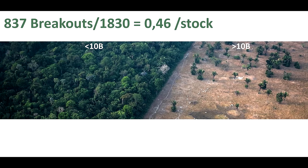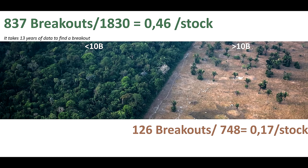Below 10 billion: 837 breakouts in 1,830 stocks gives 0.46 breakouts per stock, meaning it takes roughly two stocks to find one breakout. Since one stock represents six years of data, that works out to about 13 years of data per breakout. Above 10 billion the number is much lower — 0.17 per stock — meaning it takes 35 years of data to find one breakout. You literally have to walk through a lot of data.